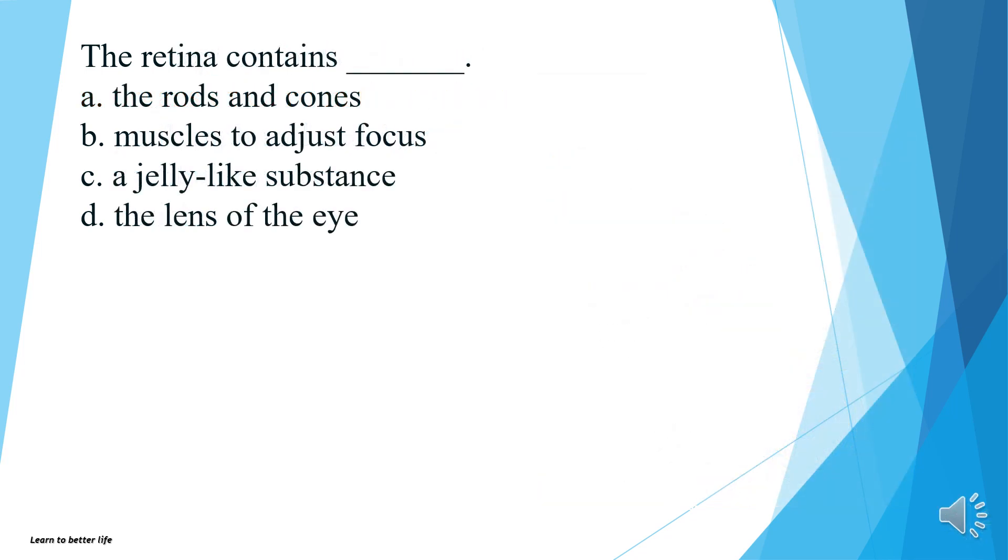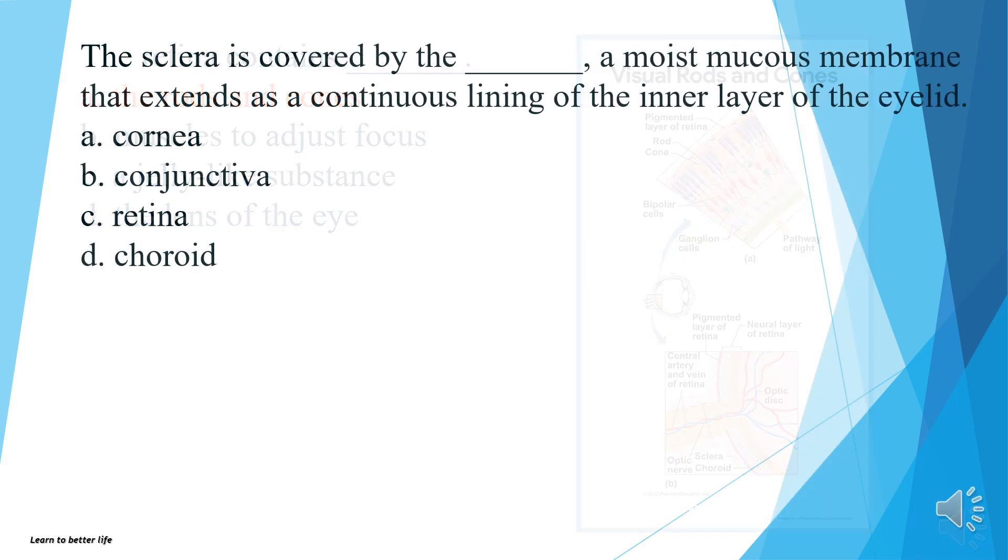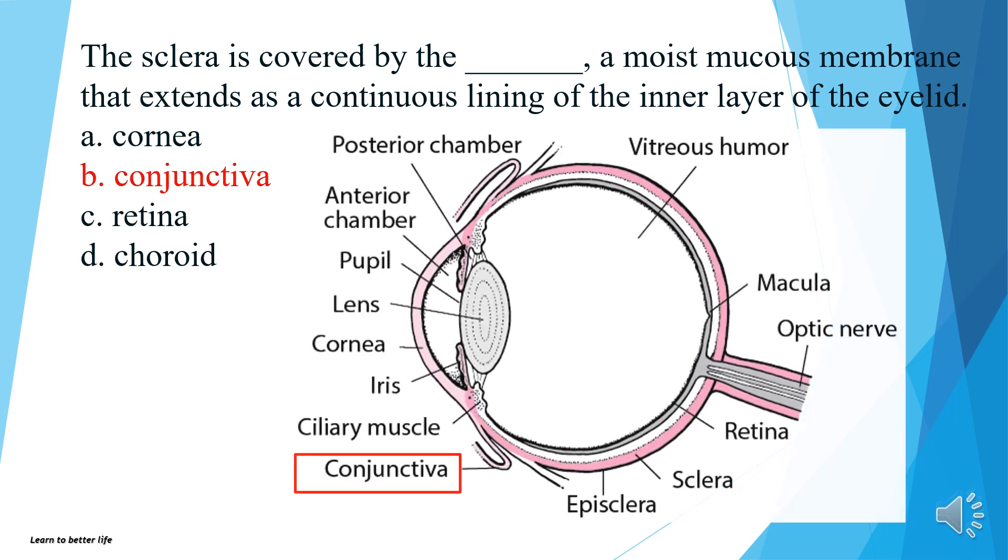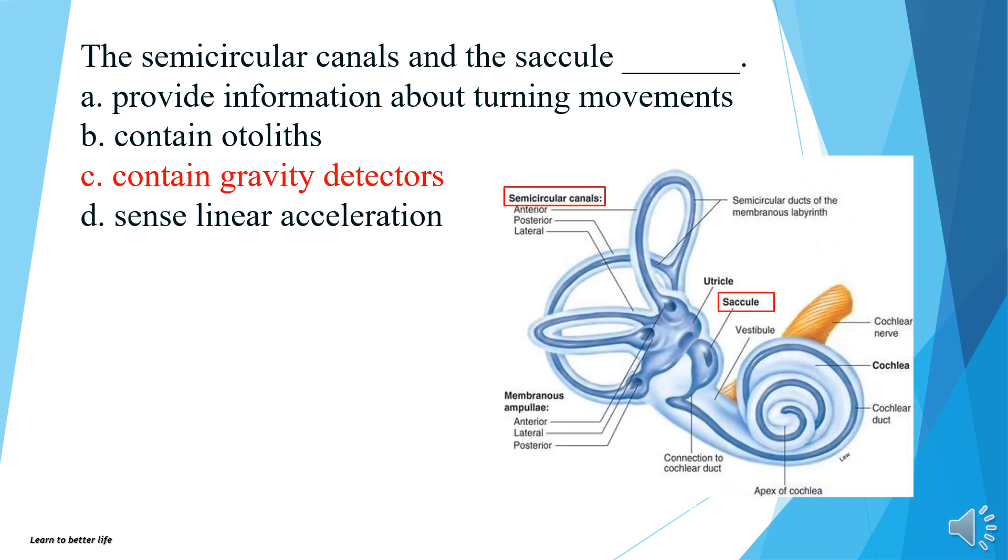The retina contains the rods and cones, muscles to adjust focus, a jelly-like substance, or the lens of the eye? The answer is A, the rods and cones. The sclera is covered by a moist mucous membrane that extends as a continuous lining of the inner layer of the eyelid: the cornea, conjunctiva, retina, or choroid? The answer is B, conjunctiva. The semicircular canals and the saccule provide information about turning movements, contain otoliths, contain gravity detectors, or sense linear acceleration? The answer is C, contain gravity detectors.